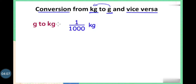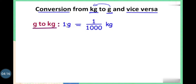Now let's learn about the conversion of gram into kilogram. 1 gram equals 1/1000 kilogram, because gram is the smaller unit and kilogram is the bigger unit. So to convert gram into kilogram, we have to divide by 1000.